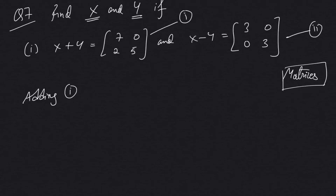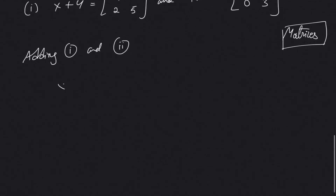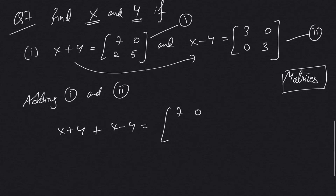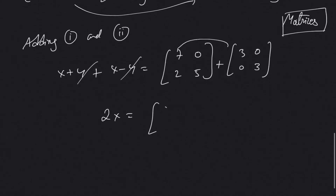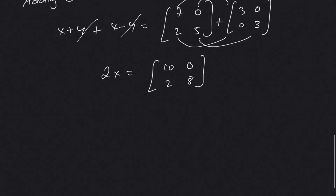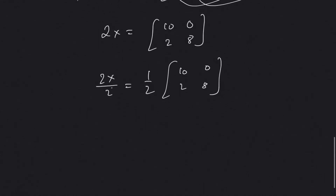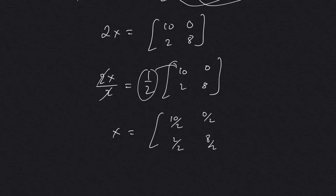We need to find matrices X and Y. First, I'll add equation 1 and equation 2 on corresponding sides: (X + Y) + (X − Y) = sum of right-hand sides. This gives 2X = [7+3, 0+0; 2+0, 5+3] = [10, 0; 2, 8]. Dividing both sides by 2, matrix X = [5, 0; 1, 4].